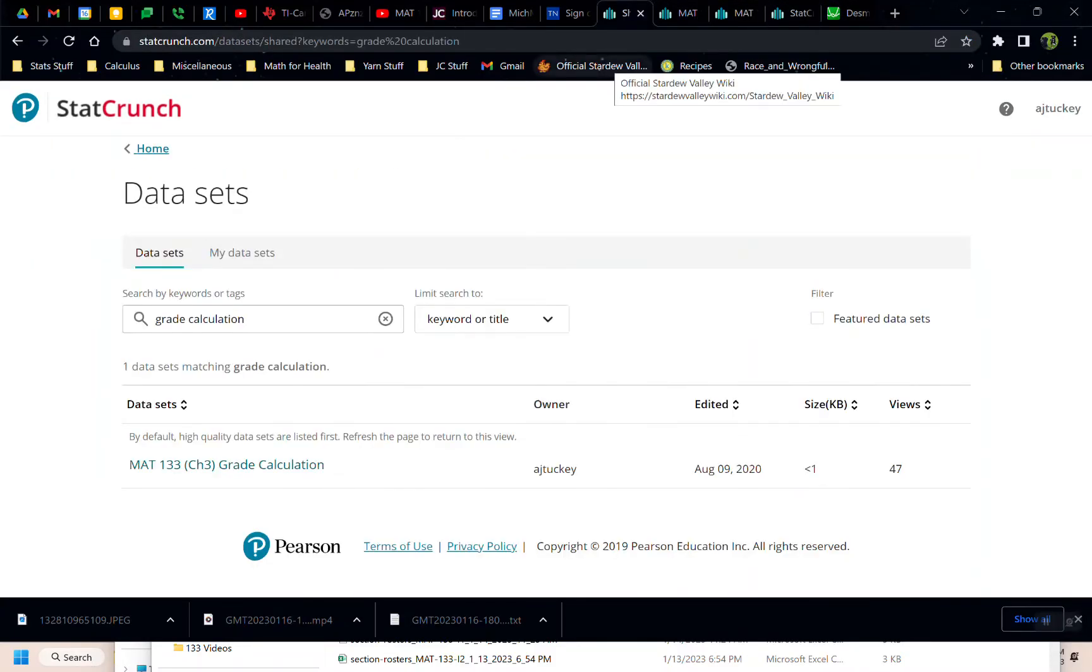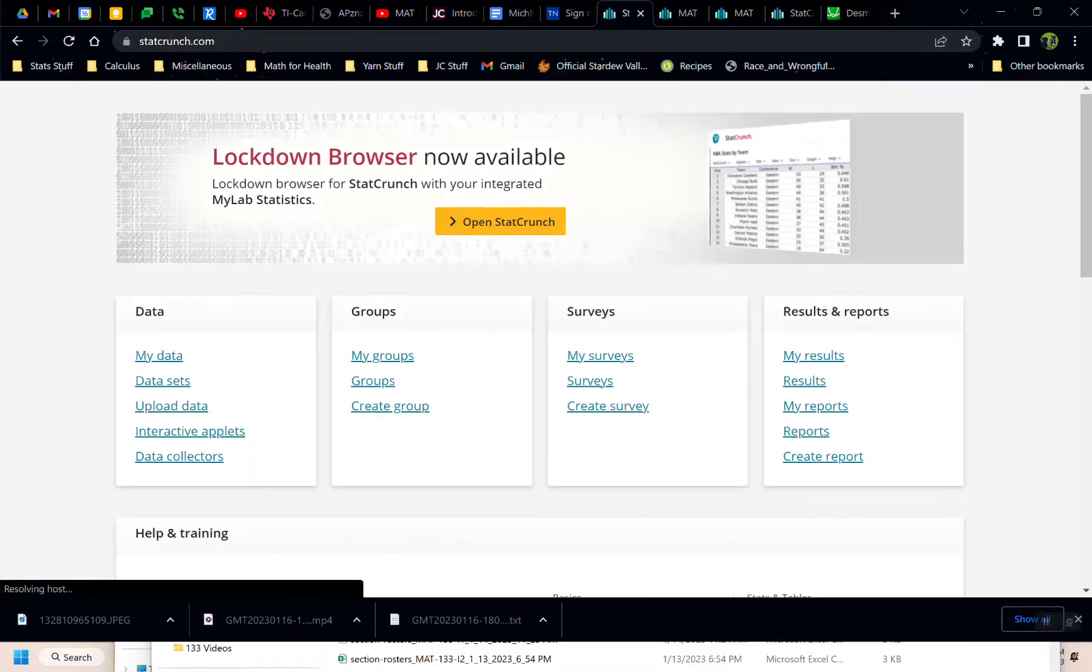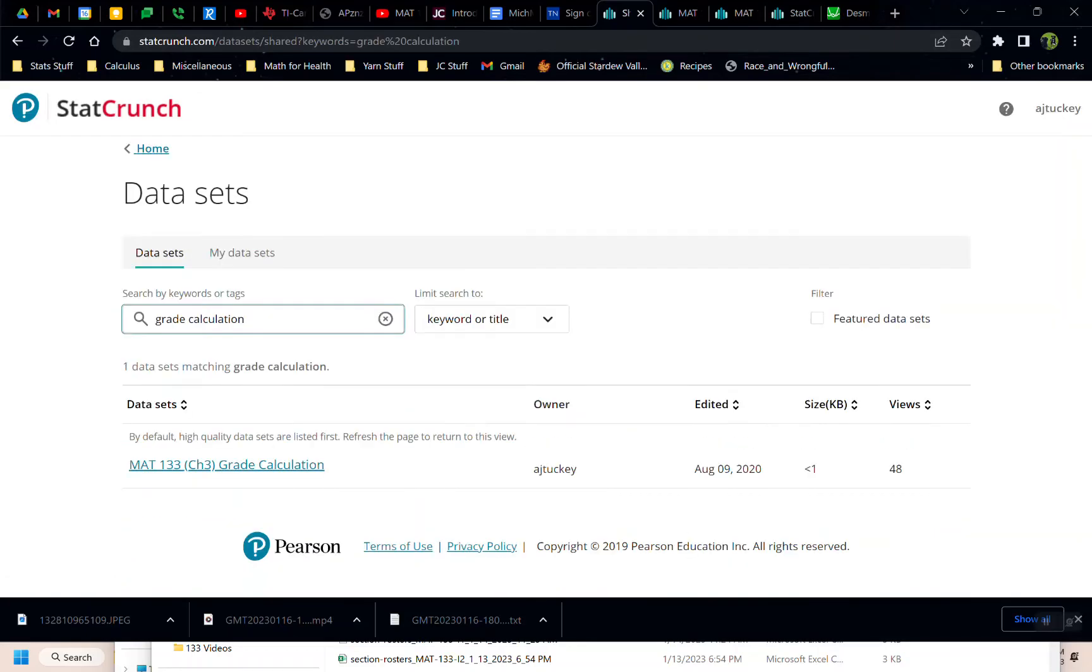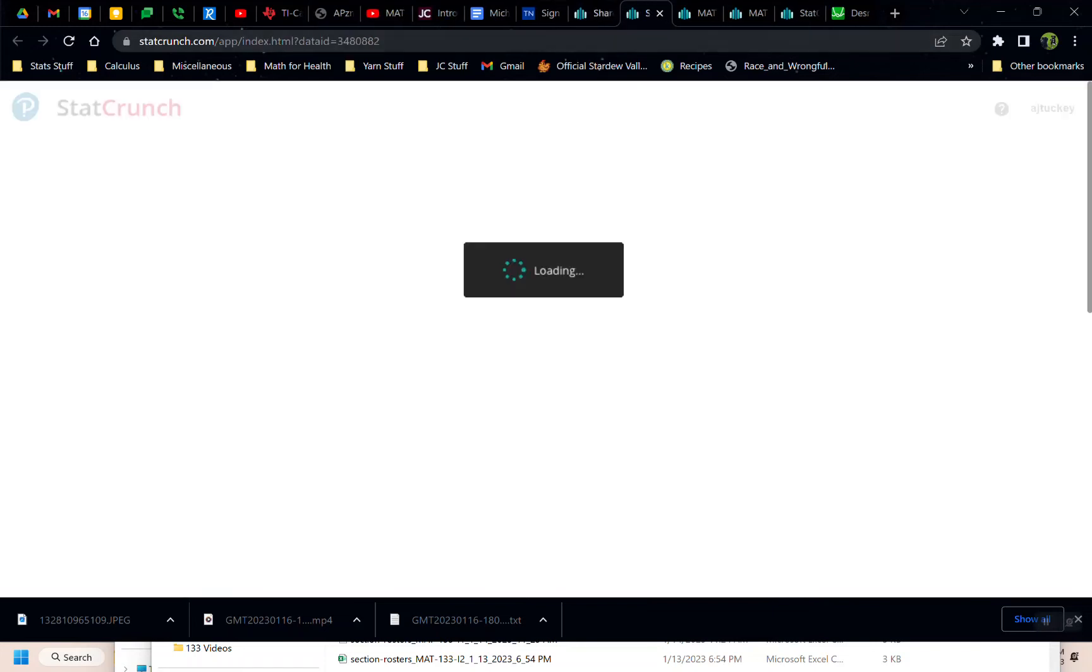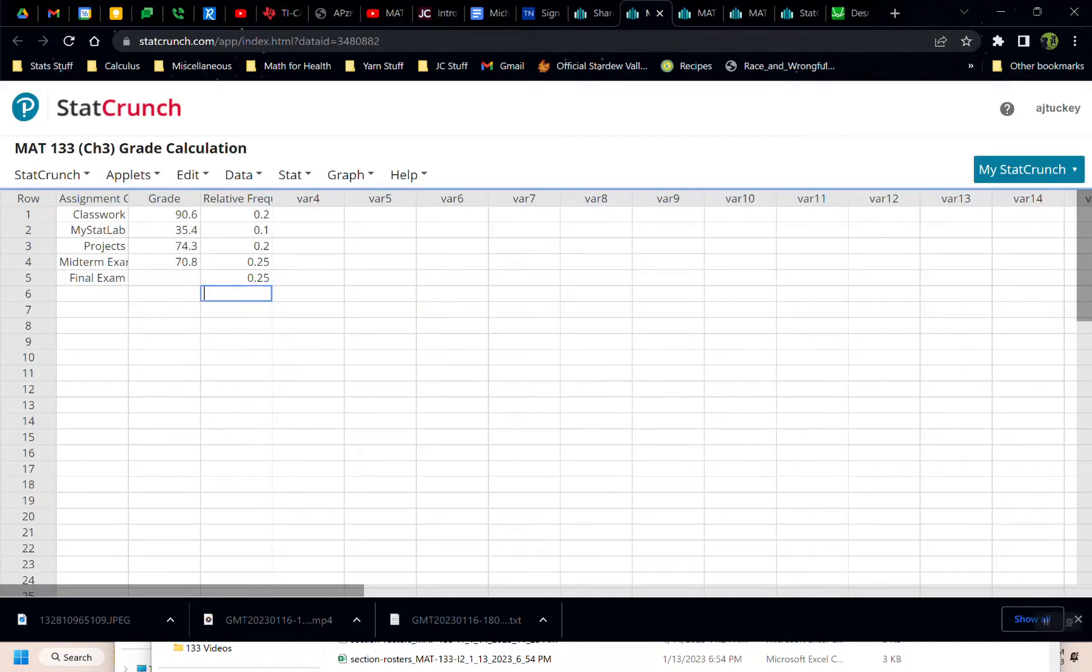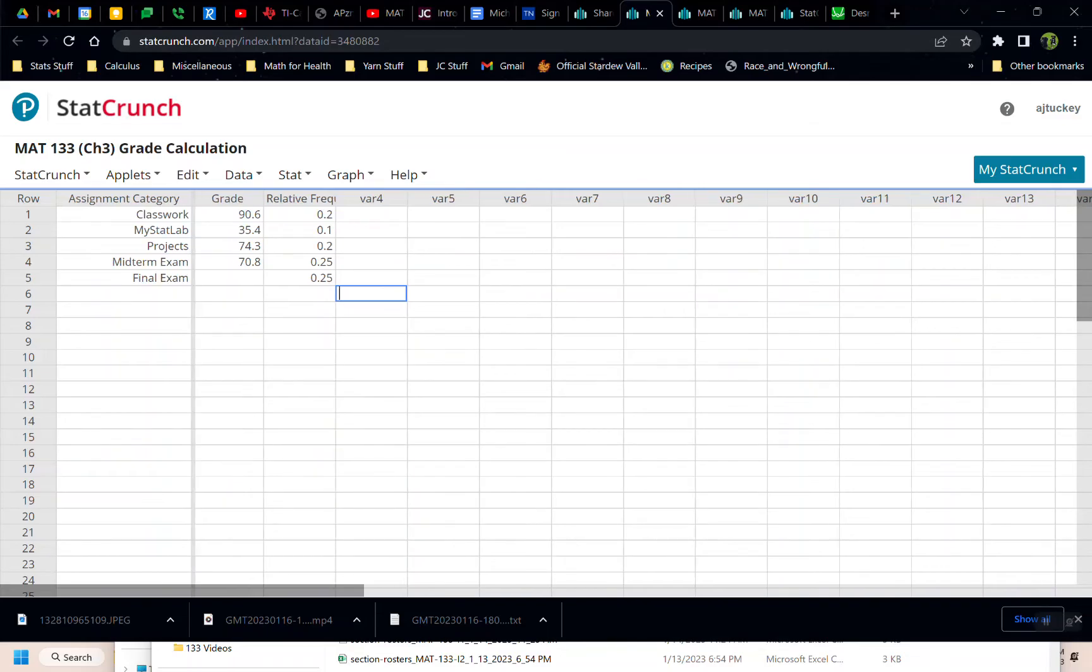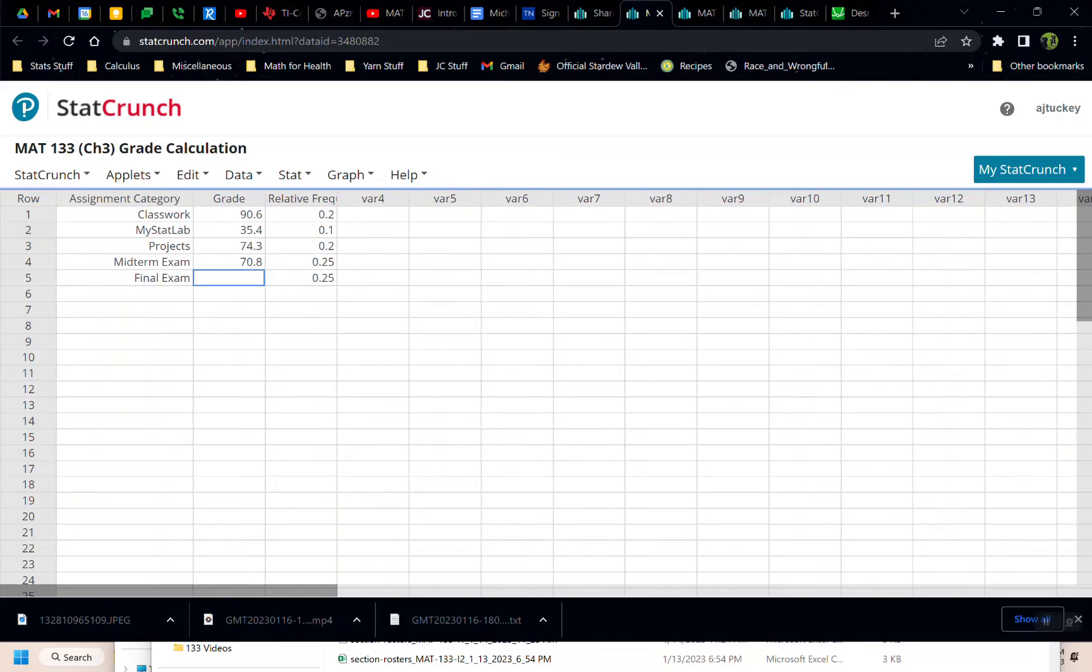Let me go grab StatCrunch. I think I did. So on the main screen I'm going to data sets, and I type grade calculation. There it is. Math 133, Chapter 3, grade calculation. I've actually put Larry's grades in and the relative frequencies just to make things easier for ourselves. I can make this a little bigger so we can see. I do that by moving my cursor to the line between where it says assignment category and grade, and then I just kind of drag.